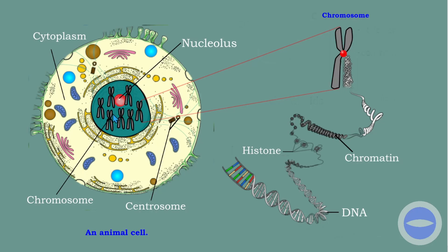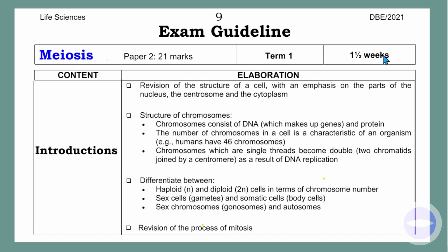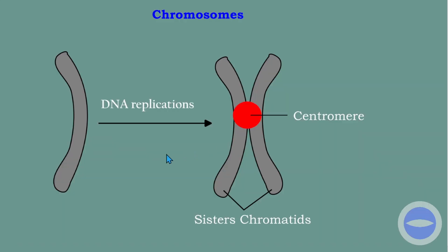Another thing: chromosomes, which are a single thread, become double — two chromatids joined by a centromere — as a result of DNA replication. Listen carefully: this is a chromosome, and after DNA replication we will have two parts that look like chromosomes. But we don't call each part a chromosome when referring to only one part.